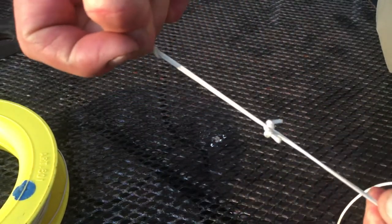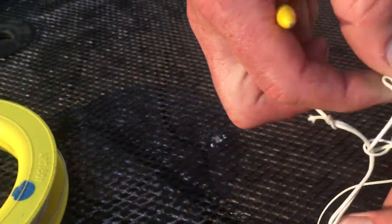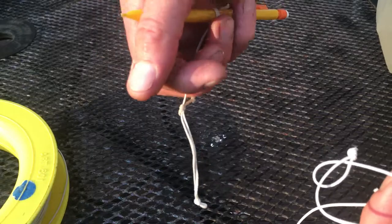Now it won't come undone, you see? But if I need to let it go, I can pull it two knots, and it comes right undone.